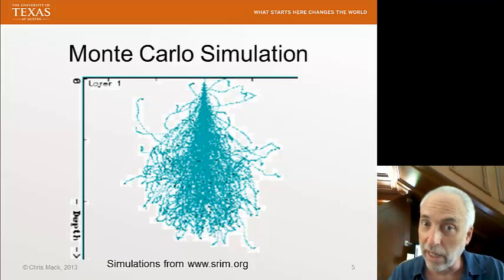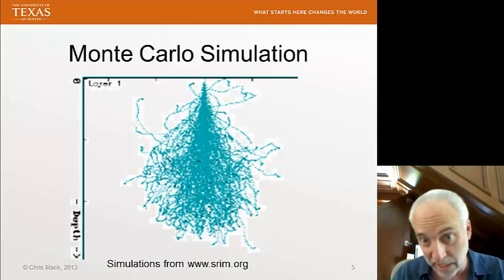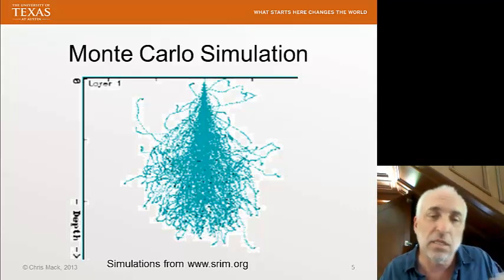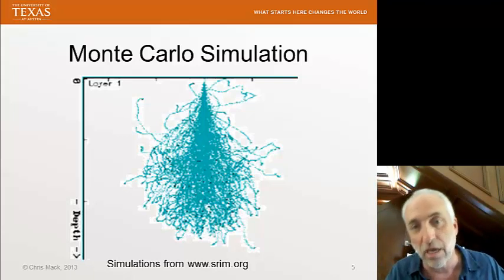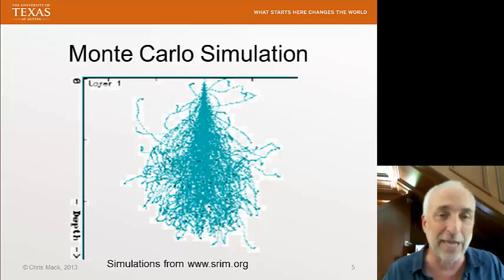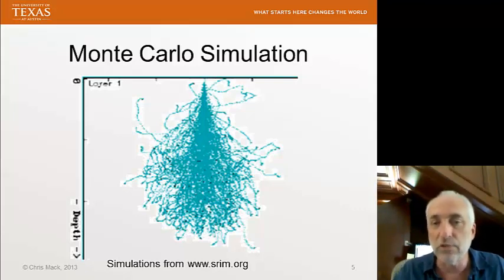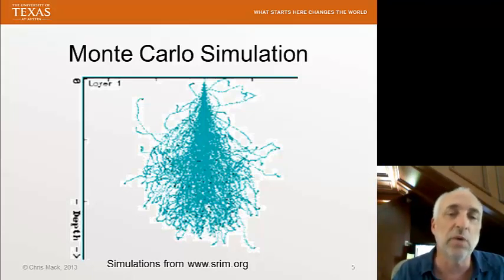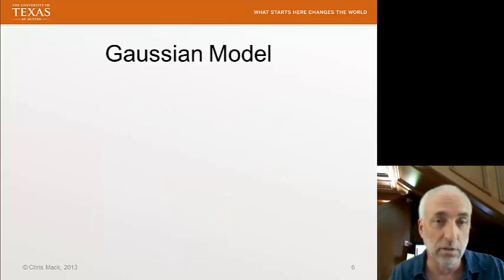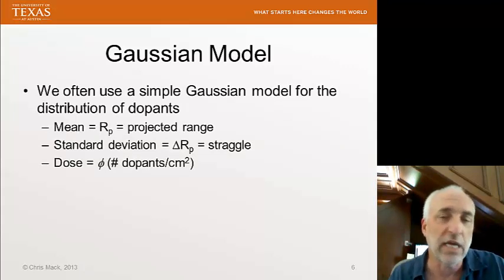Tracing the trajectories of one particle at a time and doing it a million times is a slow simulation. So generally we want to do this simulation once, extract the most important statistical properties of the final distribution of ion locations, and summarize the results — rather than listing a million X, Y, Z coordinates. One very common way to do that is to apply a Gaussian model to the final resting place of each ion; we simply say the final distribution of ions is Gaussian in shape.